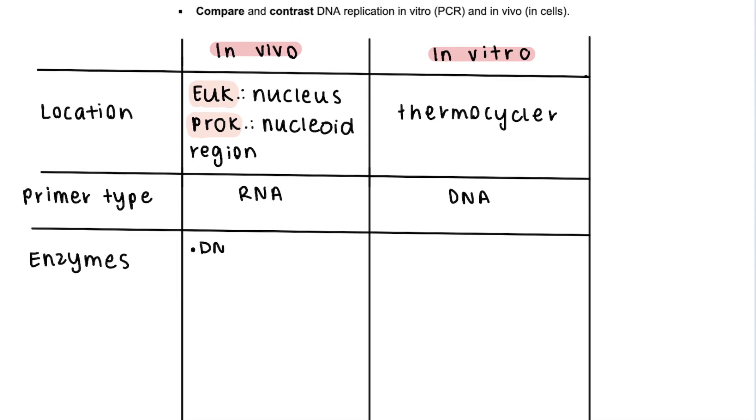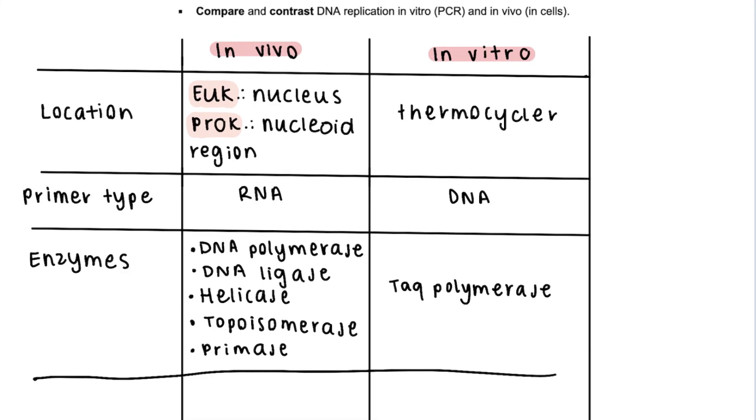In vivo, we talked about the different enzymes involved, including DNA polymerase, DNA ligase, helicase, topoisomerase, and primase. In vitro, the only enzyme used is taq polymerase to do the function of DNA polymerase. Since all the other ones are replaced by synthetic primers or DNTPs.